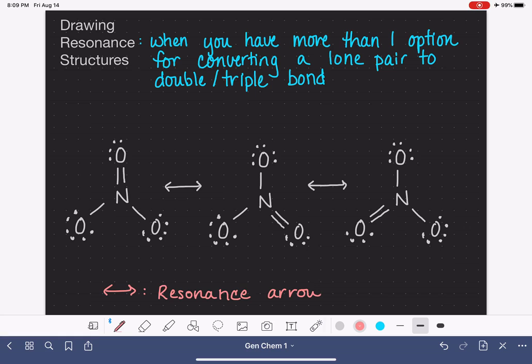So the resonance arrow tells us that this structure and this structure, because they're connected by the resonance arrow, they're just representing two choices of where we would place the double bond, or in this case we have three structures separated by the resonance arrow representing three locations where we could place that double bond.